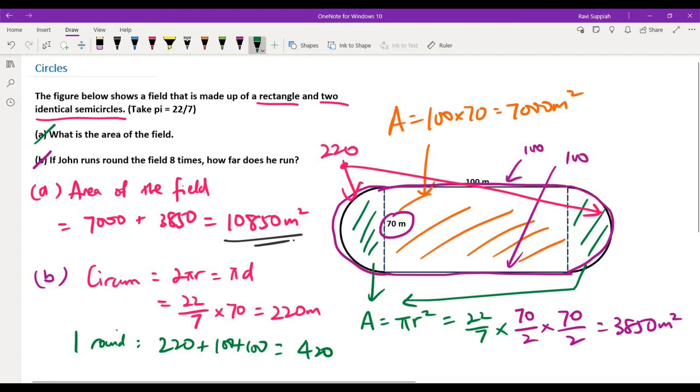So if I complete 420 meters in one round, for eight rounds around the field, it will be 420 times 8, which will be 3360 meters.